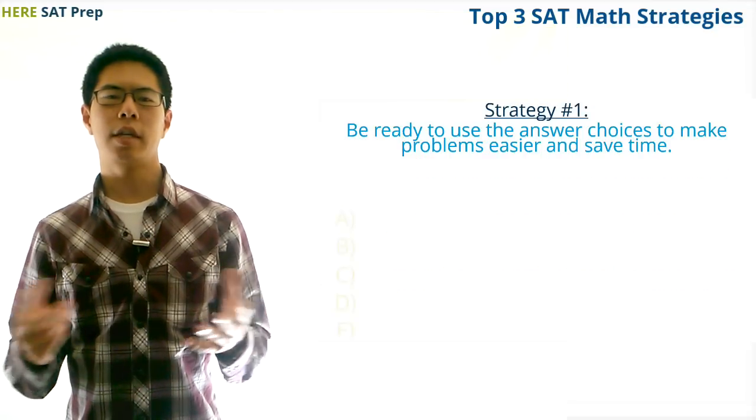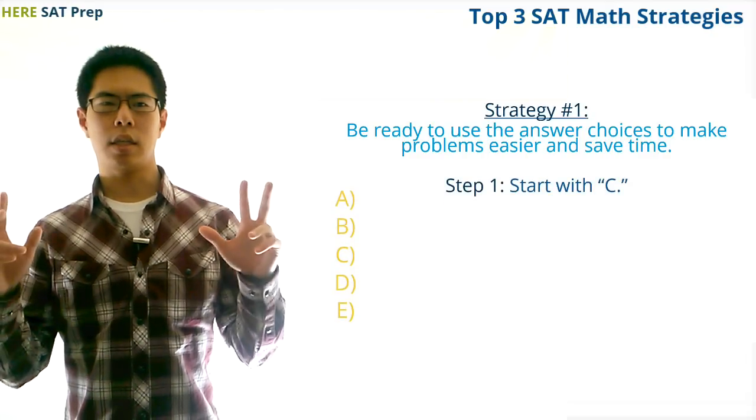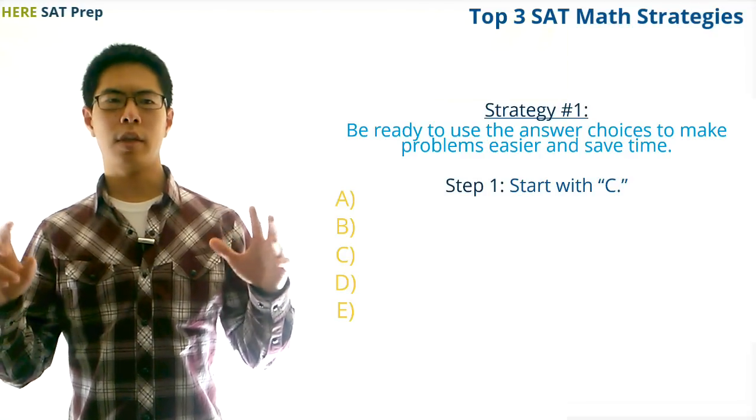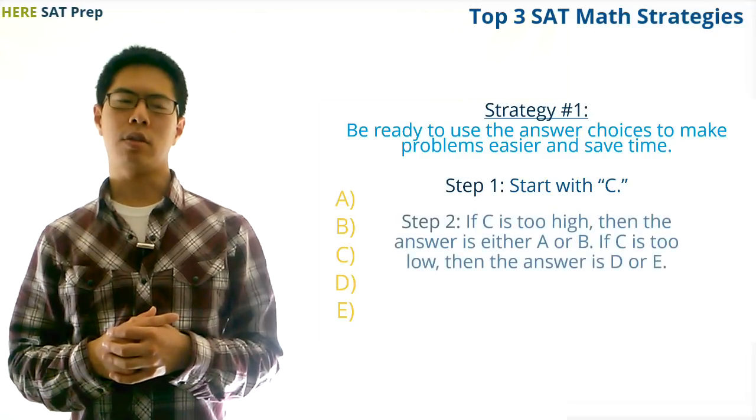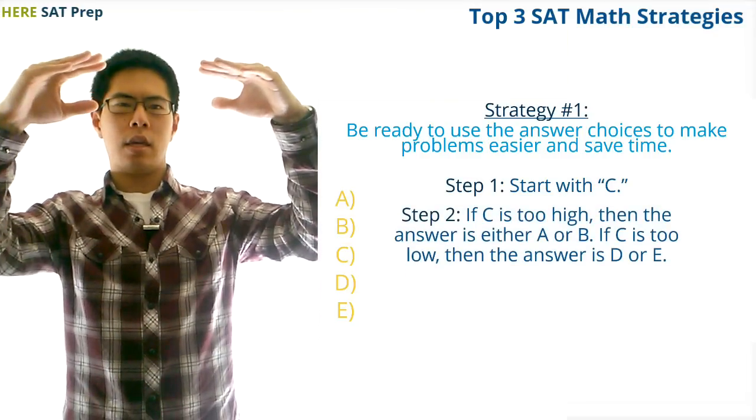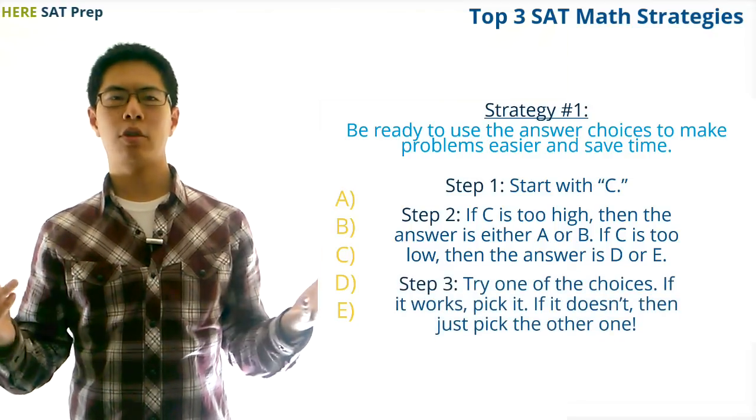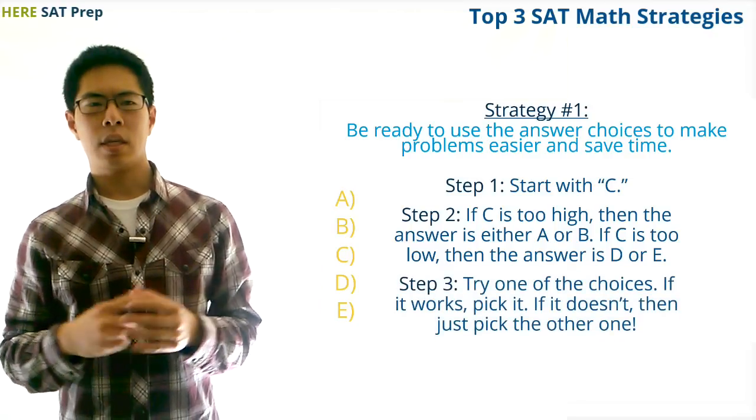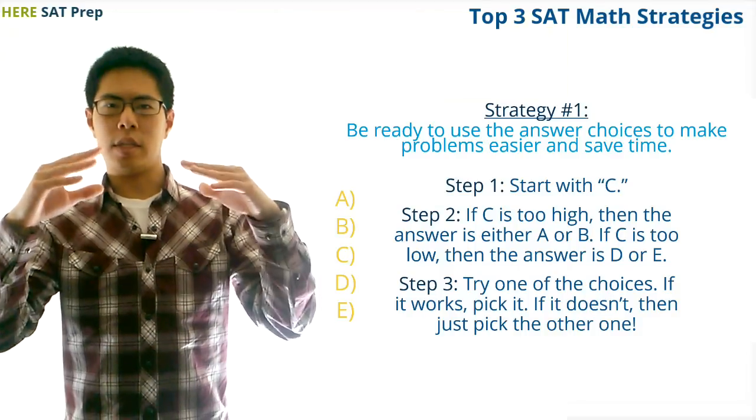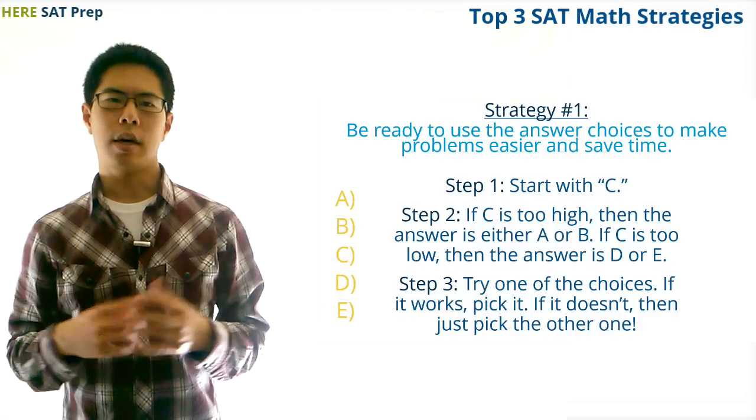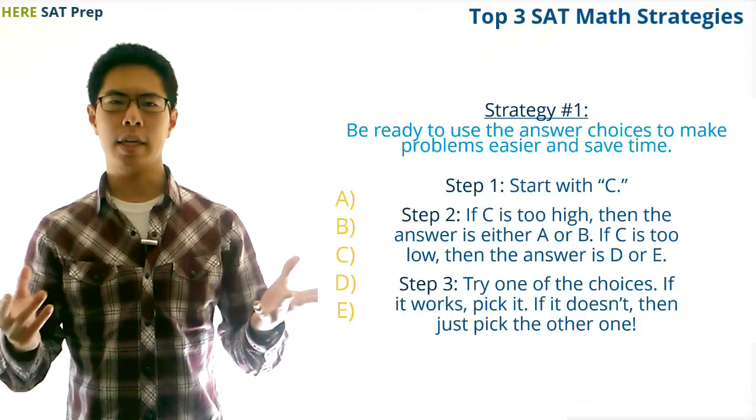One of the common strategies for using the answer choices for the SAT math test involves starting with the choice C, which would result in only needing to try one more answer choice after that at most to find the right answer. Basically, if C was too high, then you would know that the answer will be either A or B, which are lower, and so you would only need to try one of these to find the right answer. If you pick the right choice, then that's the right choice, and if you pick the wrong choice, then the other choice is the right choice. On the other hand, if your first choice C was too low, then you would do the same thing for choices D and E.